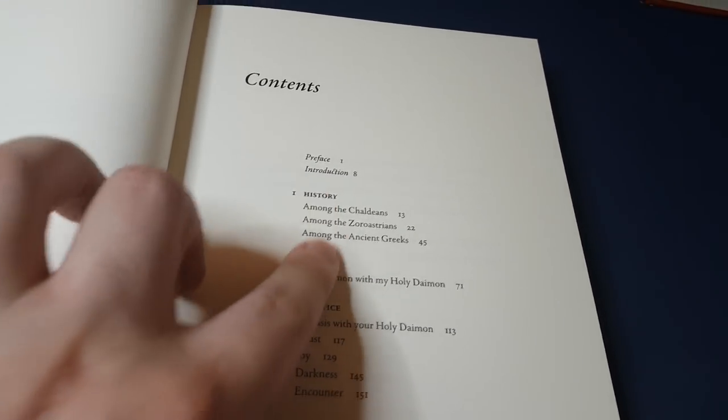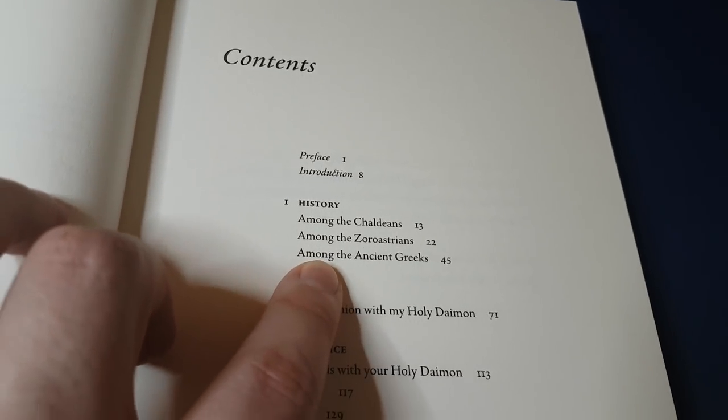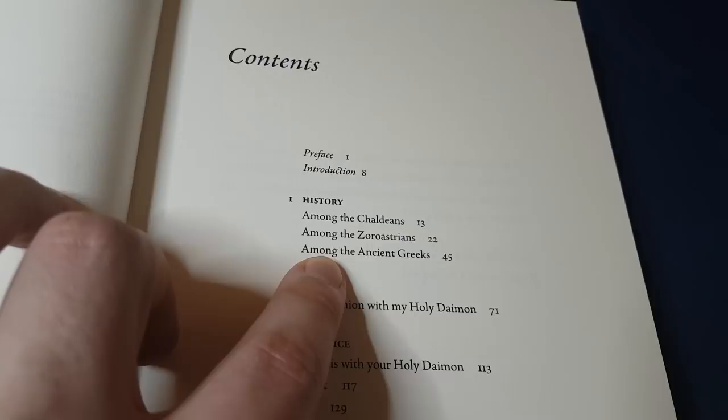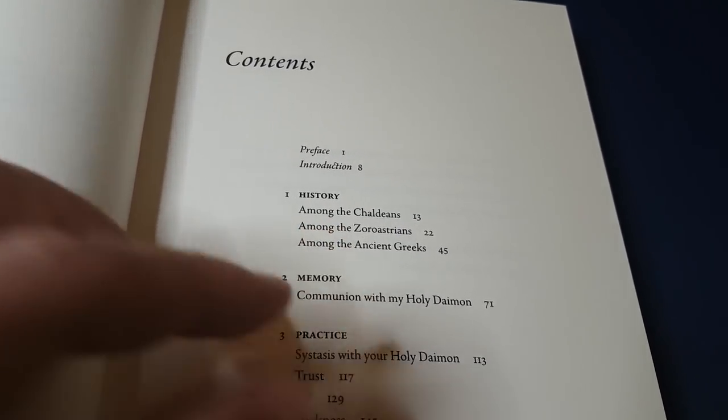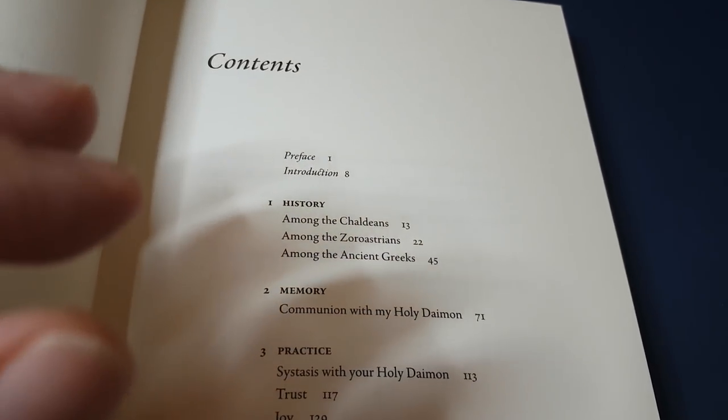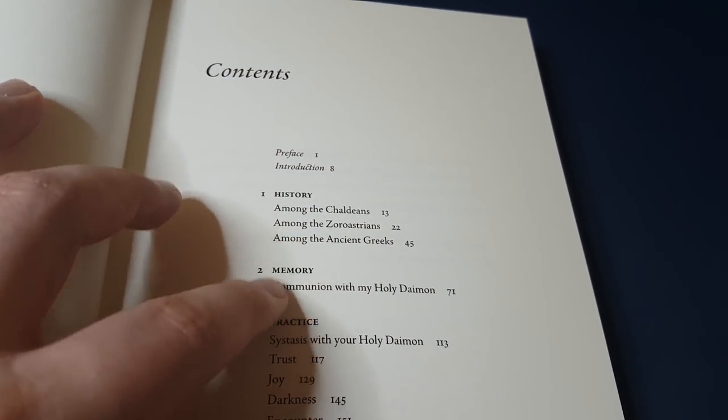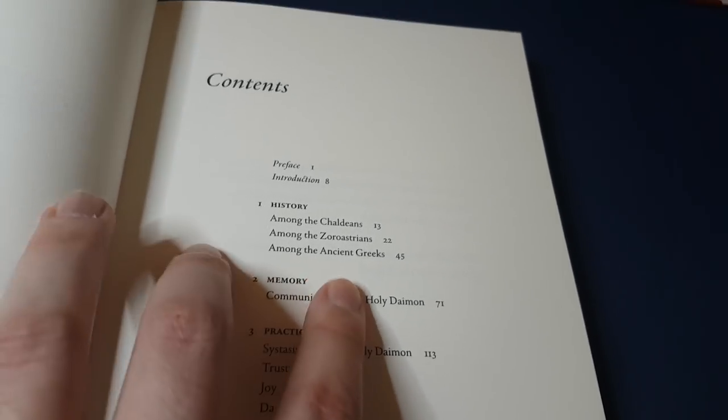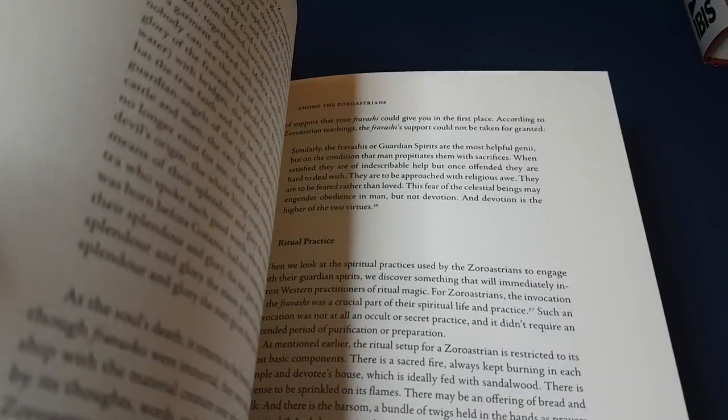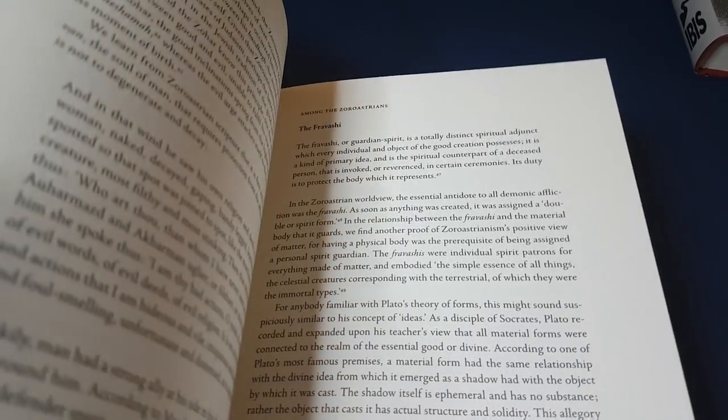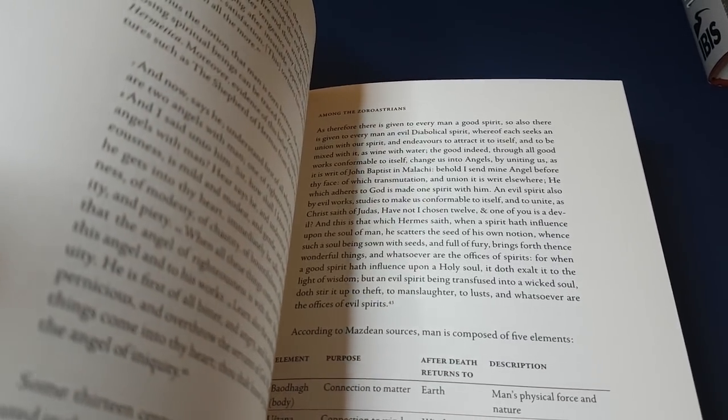And here are the contents. So at the beginning you get the history of the holy guardian angel and which civilizations used this very prominently. The Chaldeans, the Zoroastrians and the Greeks. It's fascinating, in fact, reading about what was normal in these three civilizations with regards to communication with spirits.